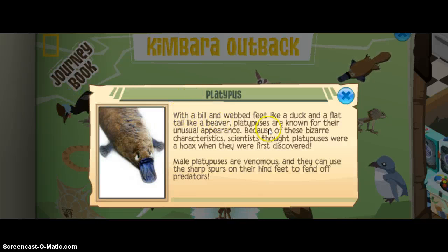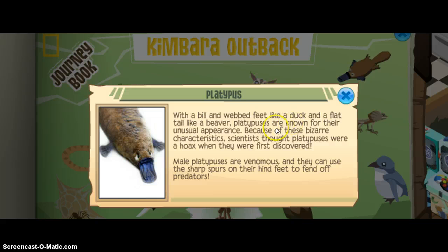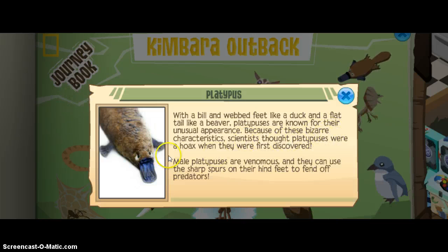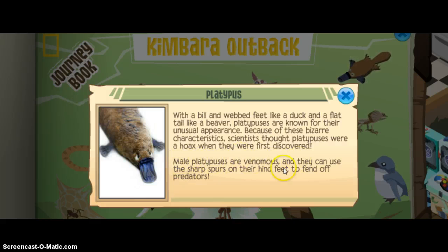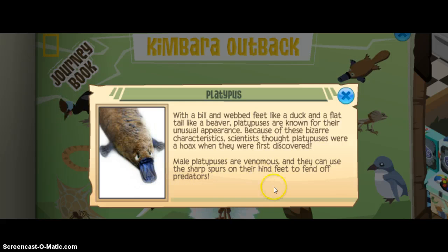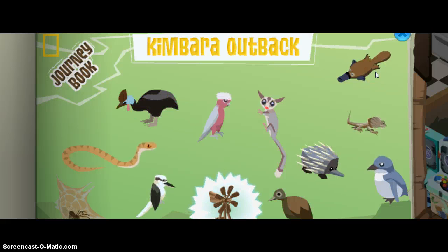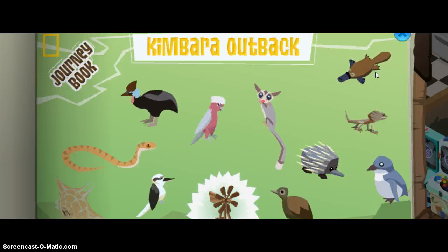With a bill and webbed feet like a duck and a flat tail like a beaver, platypuses are known for their unusual appearance. Because of these bizarre characteristics, scientists thought platypuses were a hoax when they were first discovered. Male platypuses are venomous and can use the sharp spurs on their hind feet to fend off predators.